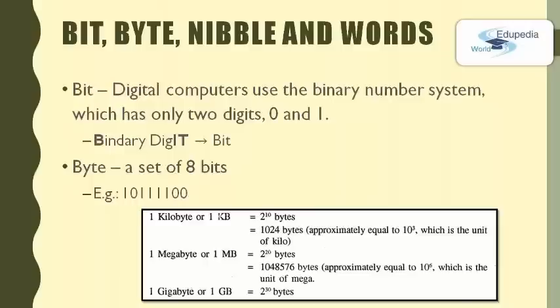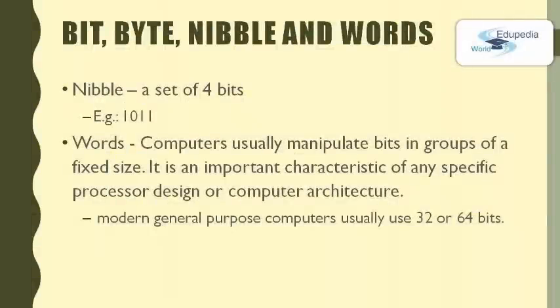1 megabyte (1 MB) is equal to 2^20 bytes, approximately 10^6, the unit of mega. 1 gigabyte (1 GB) is equal to 2^30 bytes, approximately 10^9, the unit of giga. A nibble is a set of 4 bits — for example, 1011. Computers usually manipulate bits in groups of a fixed size, which is an important characteristic of any specific processor design or computer architecture. These groups are called words. Modern general purpose computers usually use 32 or 64 bits.